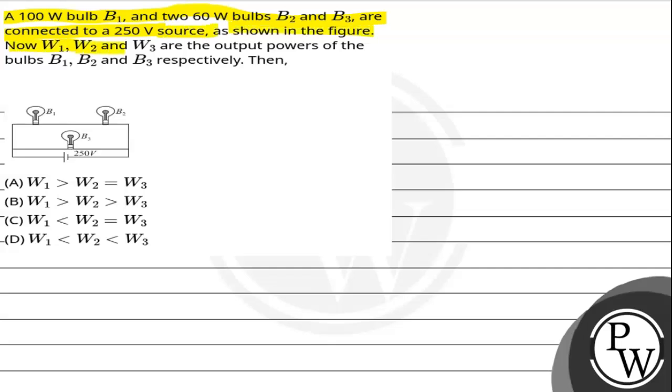Now W1, W2 and W3 are the output powers of the bulbs B1, B2 and B3 respectively. Then option A: W1 greater than W2 equals W3. Option B: W1 greater than W2 greater than W3. Option C: W1 less than W2 equals W3. And option D: W1 less than W2 less than W3.